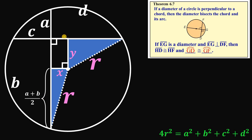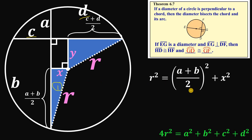And the other segment is half of C plus D, so it equals C plus D all over 2. Using the Pythagorean theorem on the first right triangle, we can say that R squared equals (A plus B over 2) squared plus Y squared.